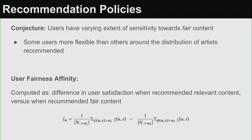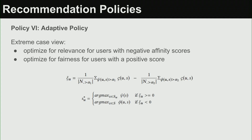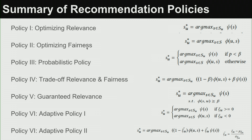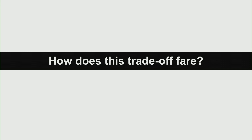We leverage the insight that users have varying sensitivity towards fair content. We can define a fairness affinity: does the user get angry if shown fair content? For users with negative affinity who would be angry, we only optimize for relevance; for users who are okay with it, we optimize for fairness as well. This is an adaptive policy. The summary: you can do pure relevance, pure fairness, things in between, or an adaptive policy that accounts for user tolerance.